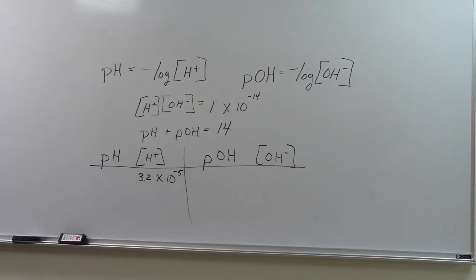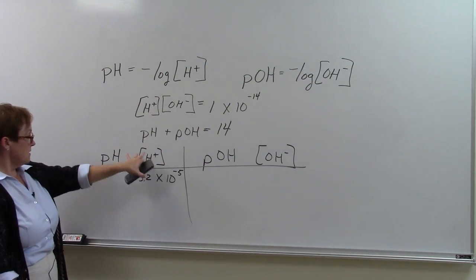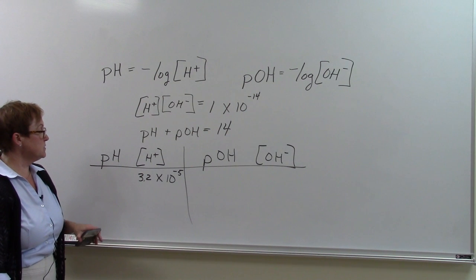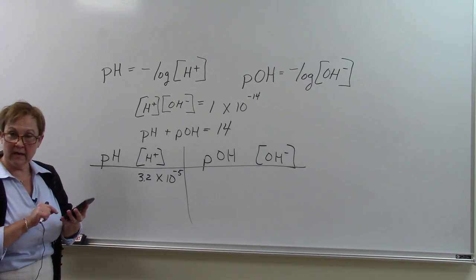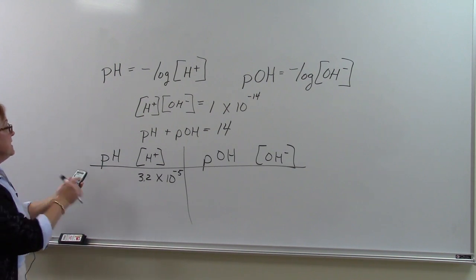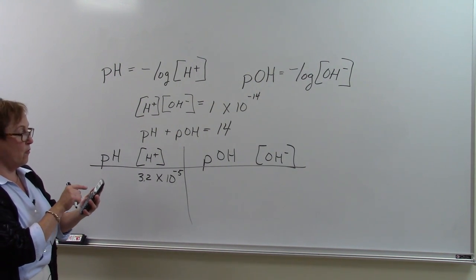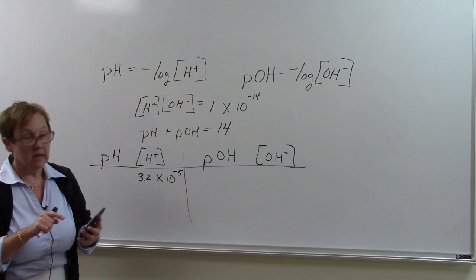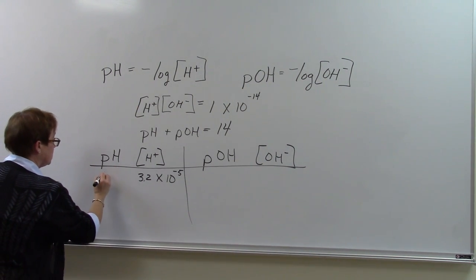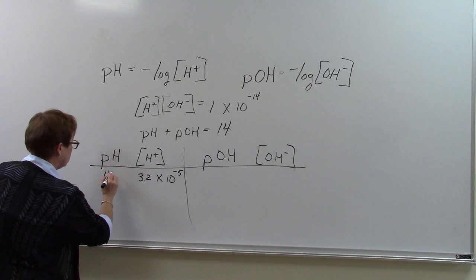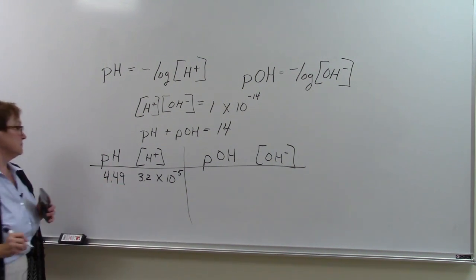If I wanted to find the pH, what do I put in my calculator? If I take hydrogen ion concentration is 3.2 times 10 to the negative 5th molar, I type in the log in my calculator. I get negative 4.49, but I take the opposite of negative 4.49, so the pH is 4.49.